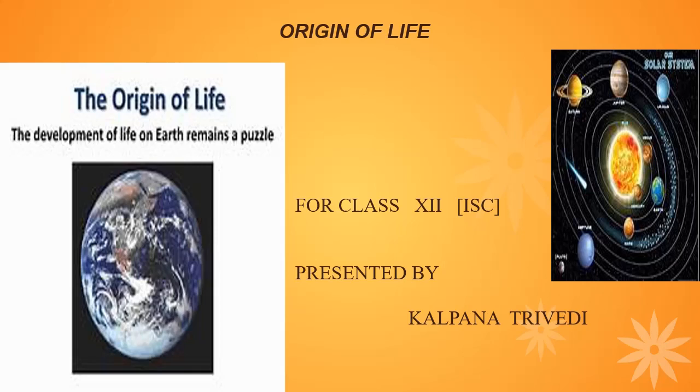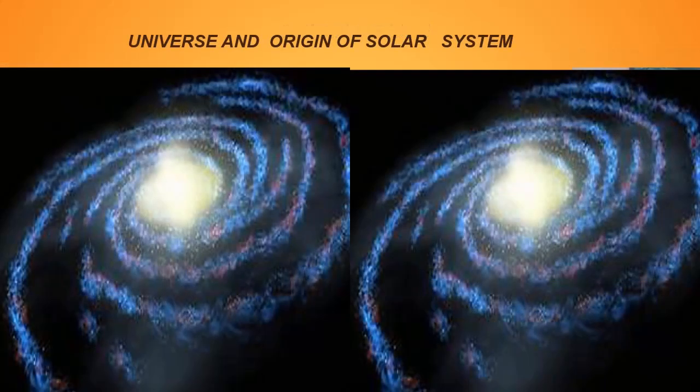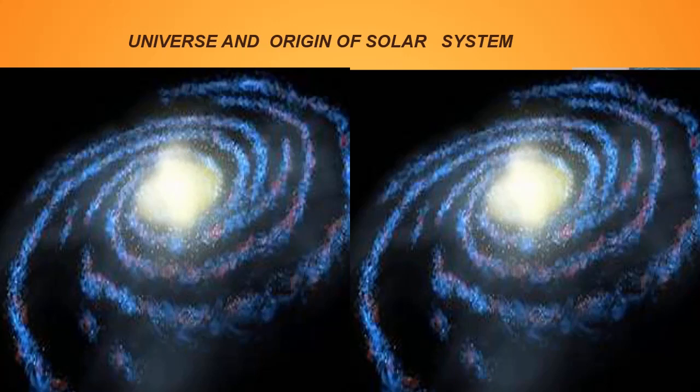Let us learn about chemical theory given by Oparin and Haldane. Universe and the origin of solar system: It is believed that the cosmos, which comprises all material of reality, originated 10 to 20 billion years ago. The prevalent view is that cosmos originated with massive explosion of tightly condensed matter billions of years ago. The Big Bang theory postulates that a singular huge explosion, unimaginable in physical terms, caused the universe to expand and hence the temperature came down.